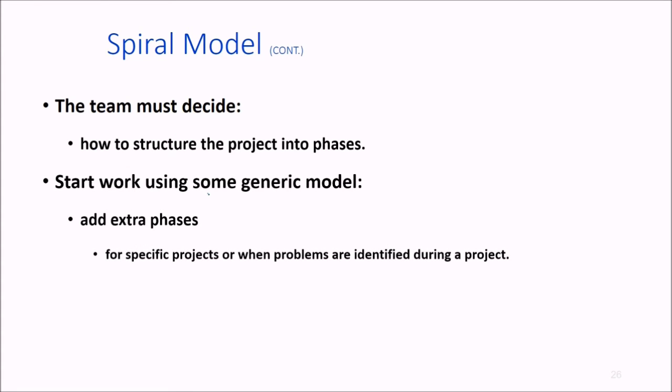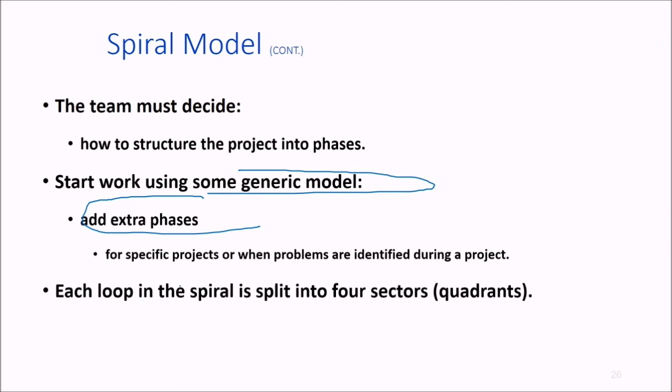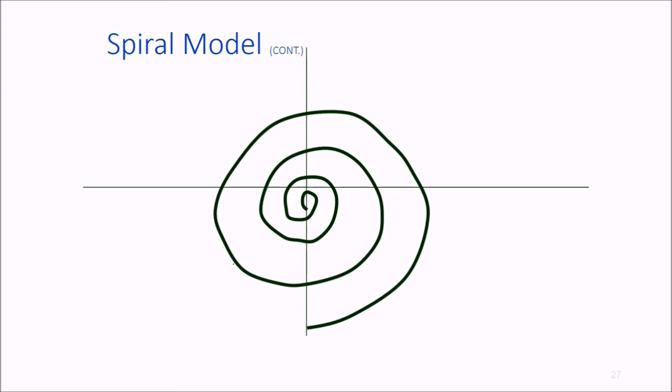You can add extra phases for specific projects when problems are identified. Each loop in the spiral is split into four quarters or sectors. We need to: determine objectives, identify and resolve risk, develop the next level of product, and then perform customer evaluation of the design.